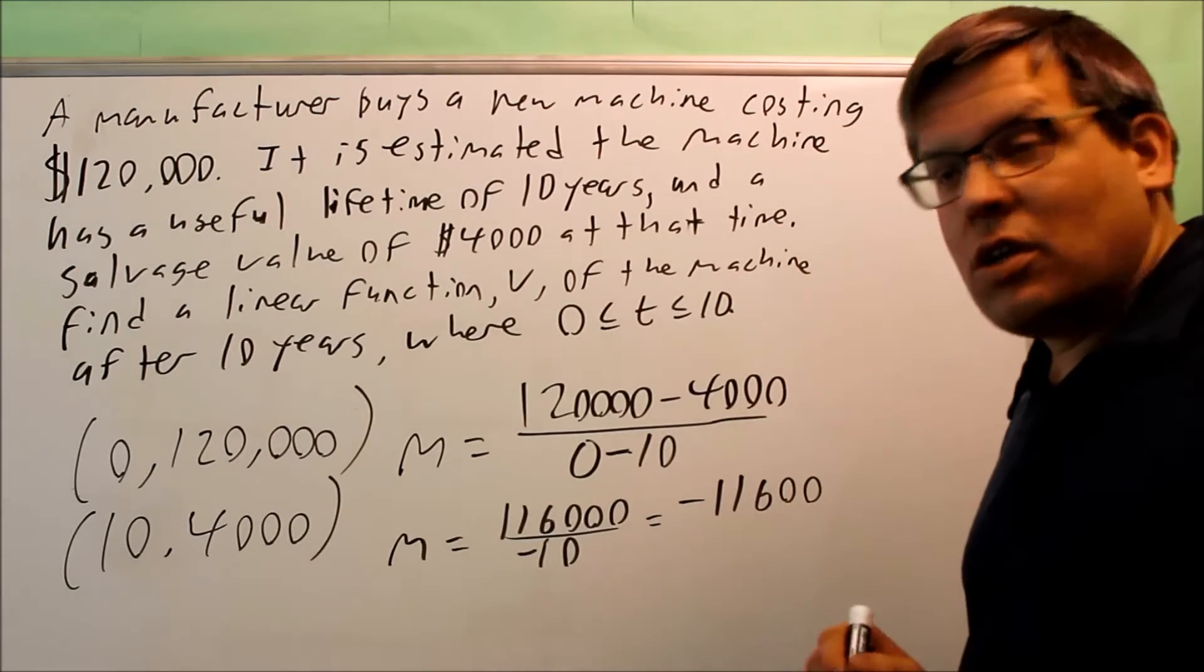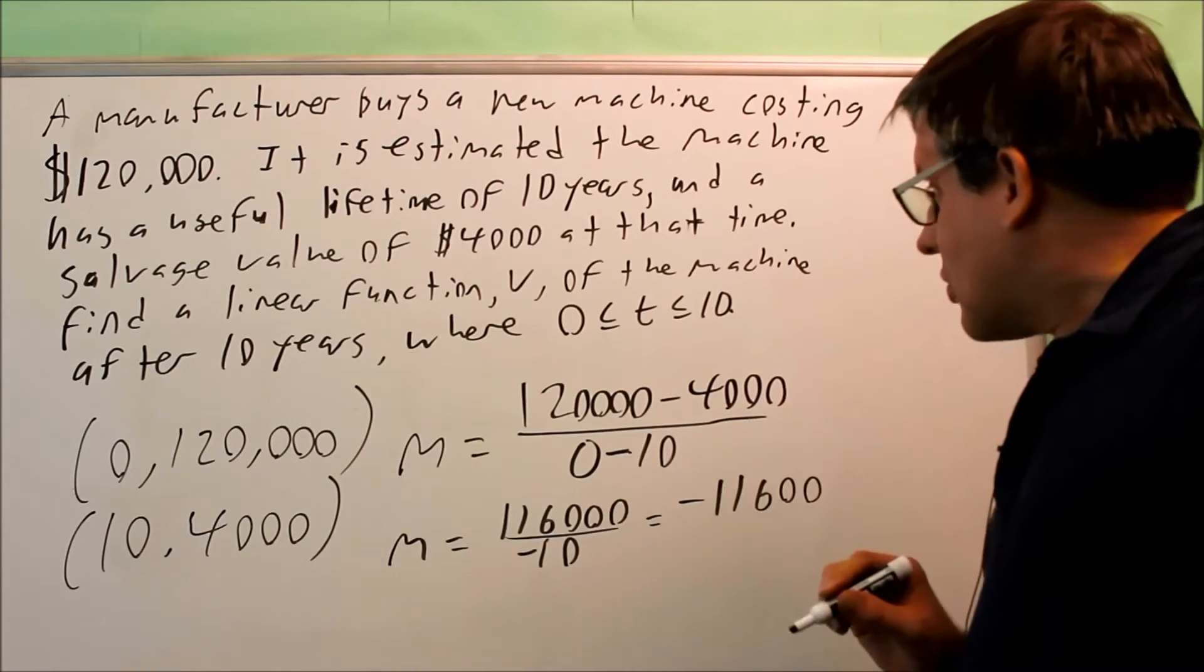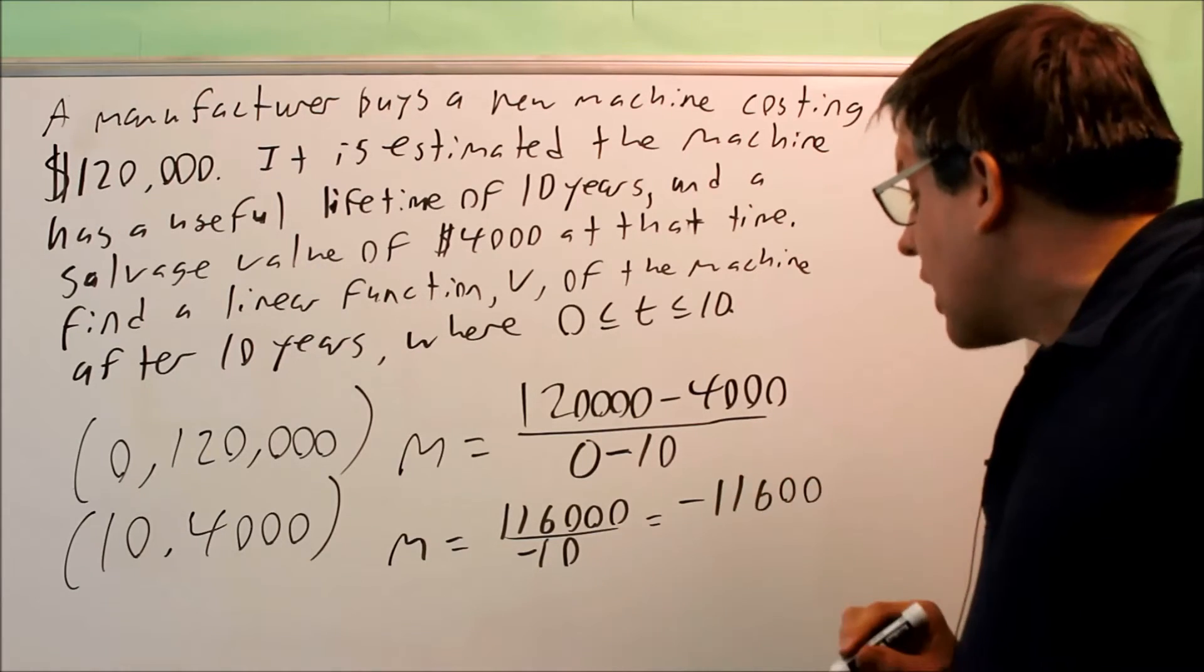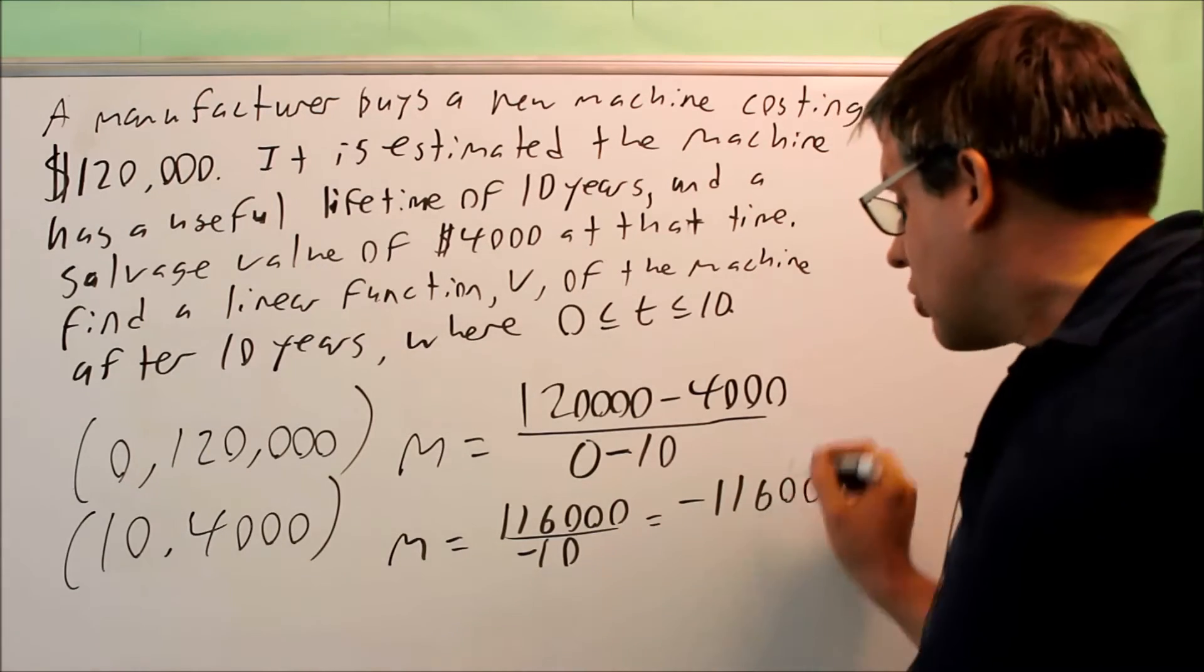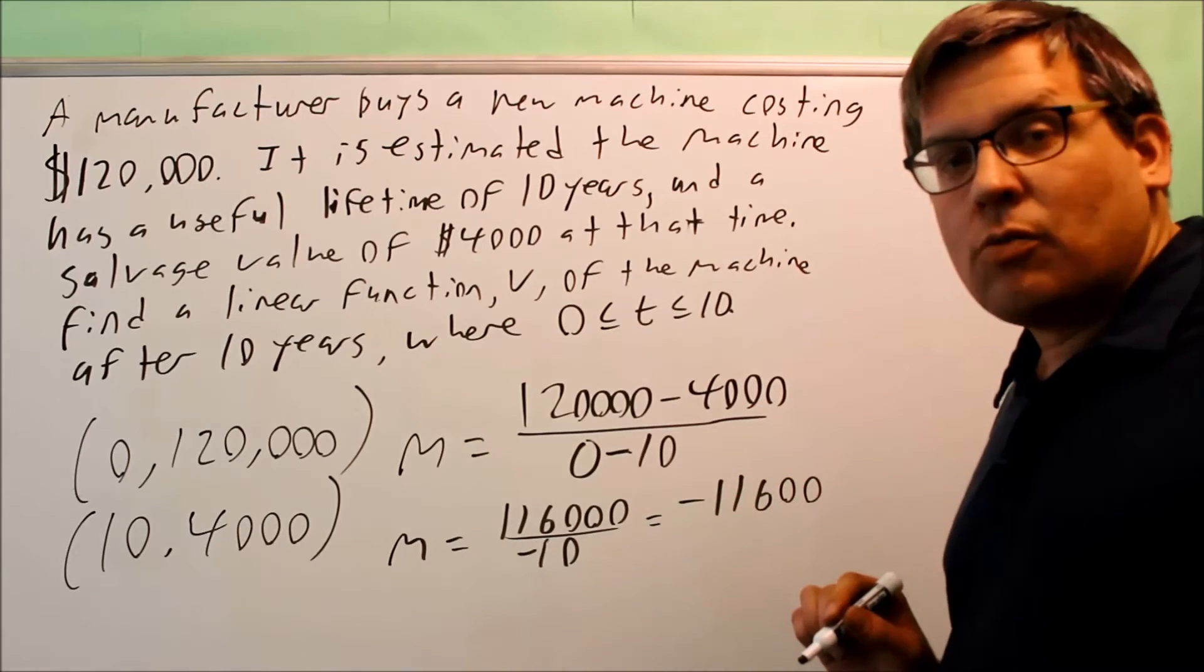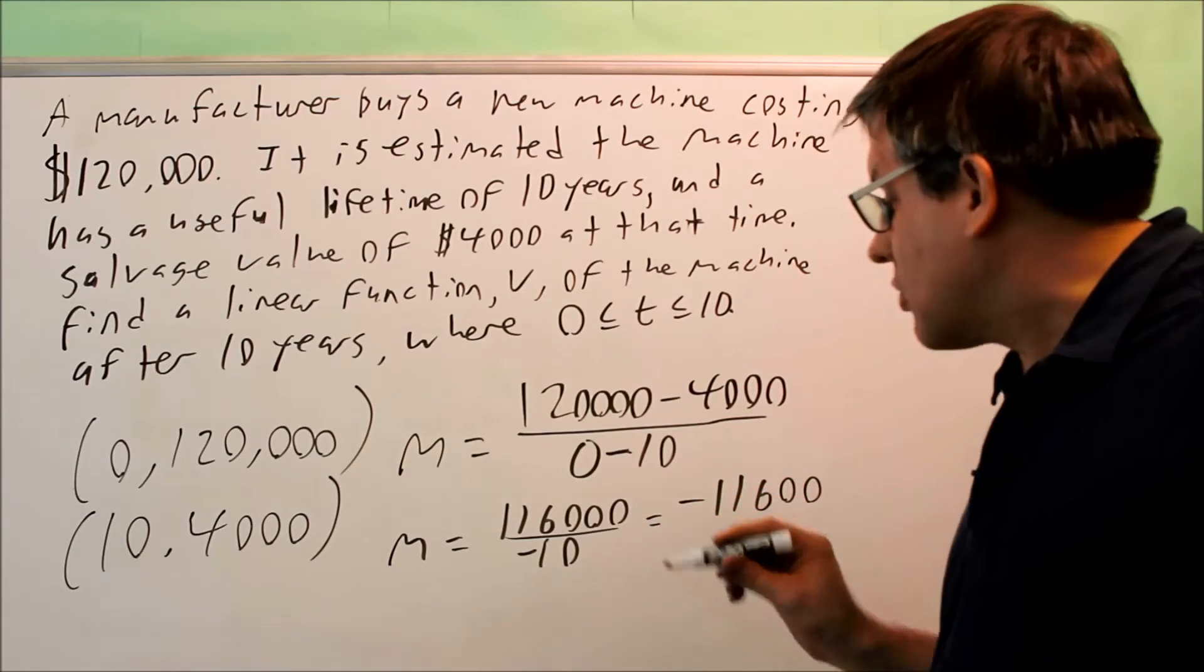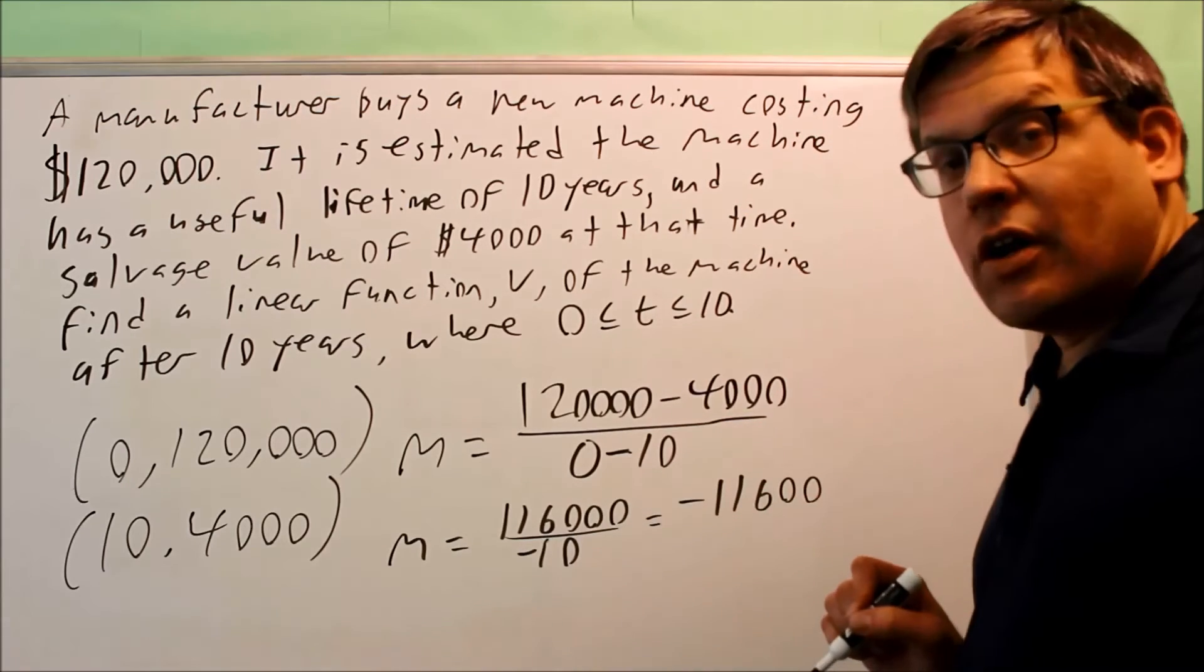So what does that actually mean? The meaning of this is that every year, on average, this is losing $11,600. So we should expect to have a negative for our slope because we're talking about something that is losing value over time. So that's going to be your slope right there.